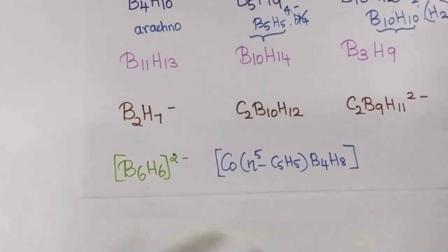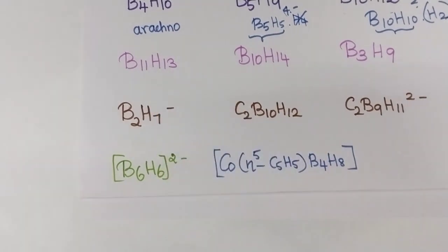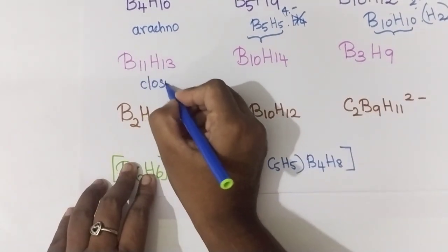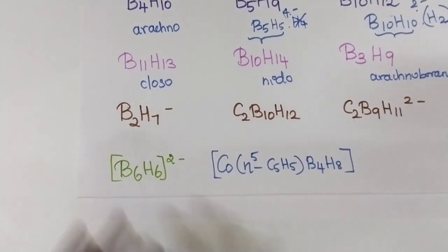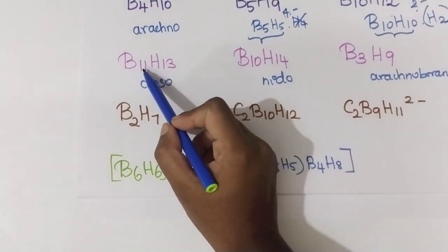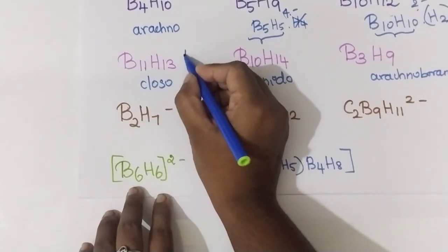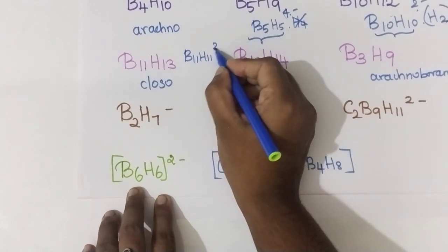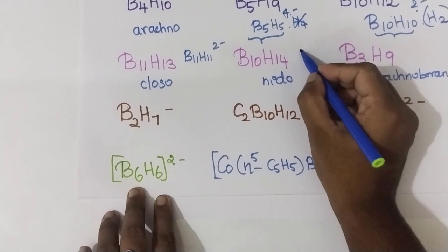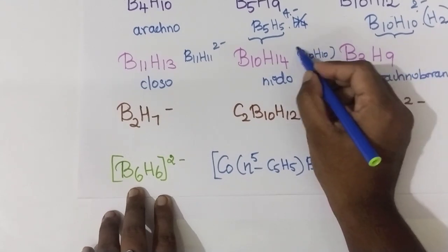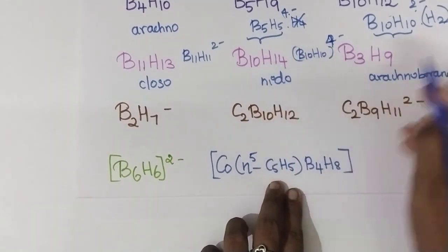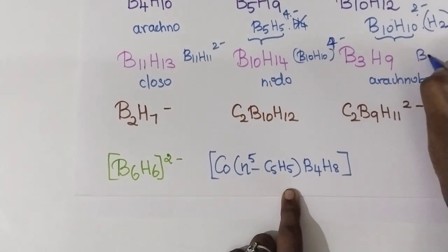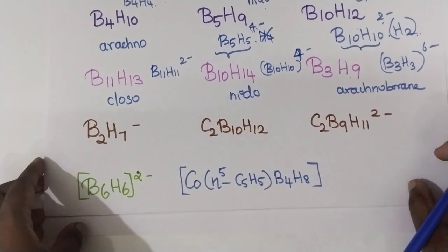Now you can solve these questions. B11H13 — you can write it as B11H11 dot H2, which is 2 minus, so it is closo borane. B10H14 — B10H10 with H4 remaining, that is 4 minus, so it is nido borane. B3H9 — B3H3 with 6 remaining hydrogens, so 6 minus, it is arachno borane.